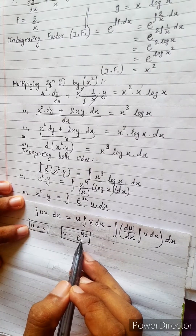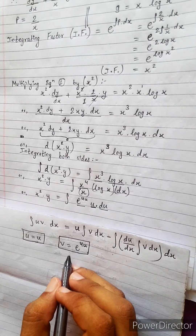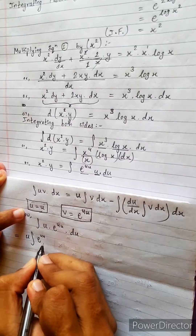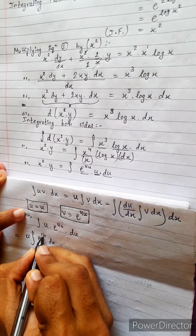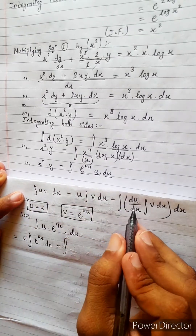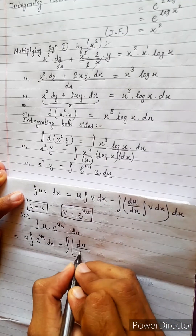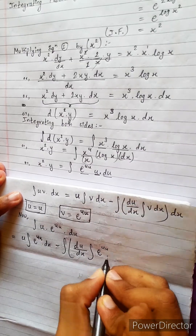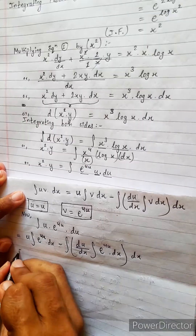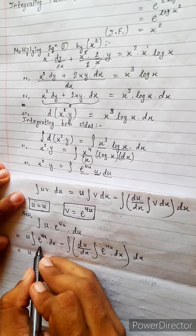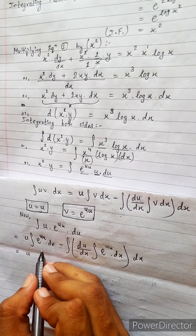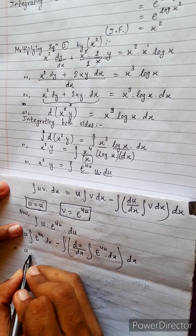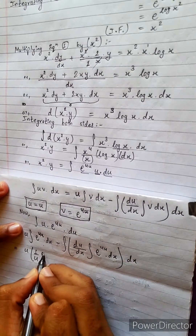Let's take the integration by parts formula: ∫u v dx = u · ∫v dx − ∫(du/dx · ∫v dx) dx. Applying this, with u = log x and v = x³: first term is (log x) · (x⁴/4). For the integral of e^(4u), the formula gives (1/4)e^(4u).